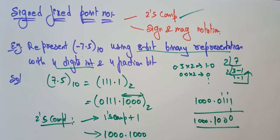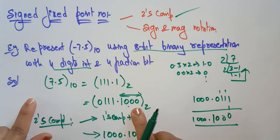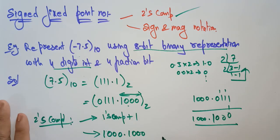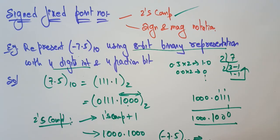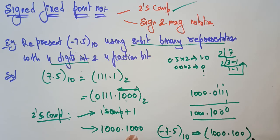So, to summarize: take the rightmost bits including the first 1 — don't change them — and interchange all the leftmost bits. This is the representation of minus 7.5 base 10: its two's complement is 1000.1000 base 2. In the next video, I'll take more examples to explain signed and unsigned fixed point representation. Thank you.